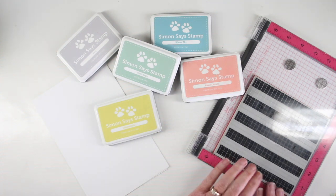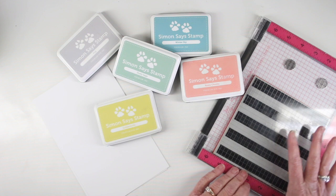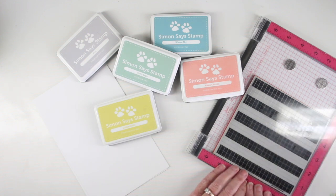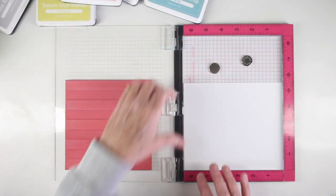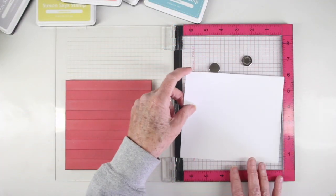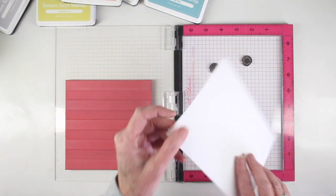I'll be using my MISTI to do my stamping with the wide stripes background cling stamp because it has five stripes that I can color. I'm using 80 pound Neenah white cardstock cut to about six and a half by six so that I can turn it to make a plaid.